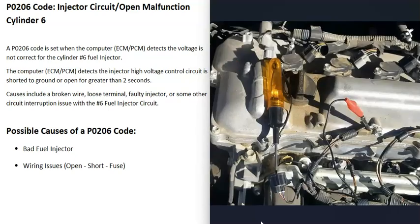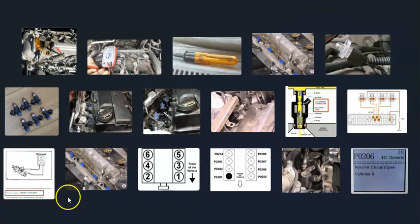So that's the overview of how to fix a vehicle with a P0206 code. The main causes are either a bad fuel injector or a wiring issue going to it. If you have anything to add, comment below. If you have questions, ask and I'll try to answer. If this video helped you, please like and subscribe.